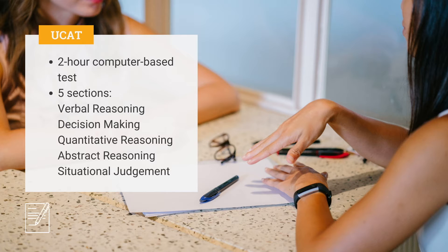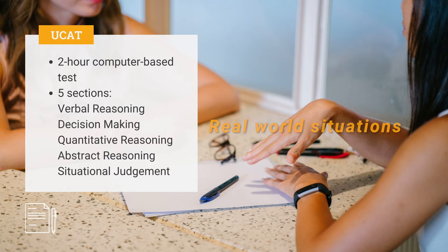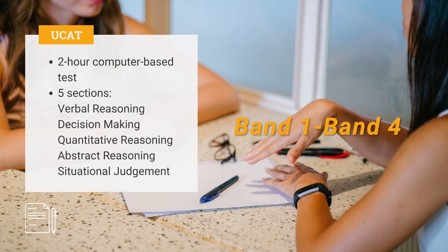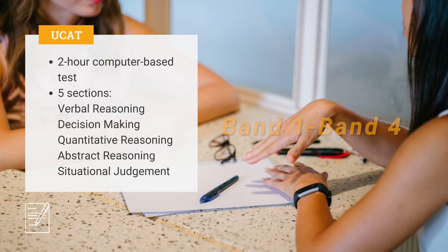Situational judgement tests your capacity to understand real-world situations and to identify critical factors and appropriate behaviour in dealing with them. This is also the only UCAT section that uses a band scoring system, with band 1 being the highest performing band and band 4 the lowest.